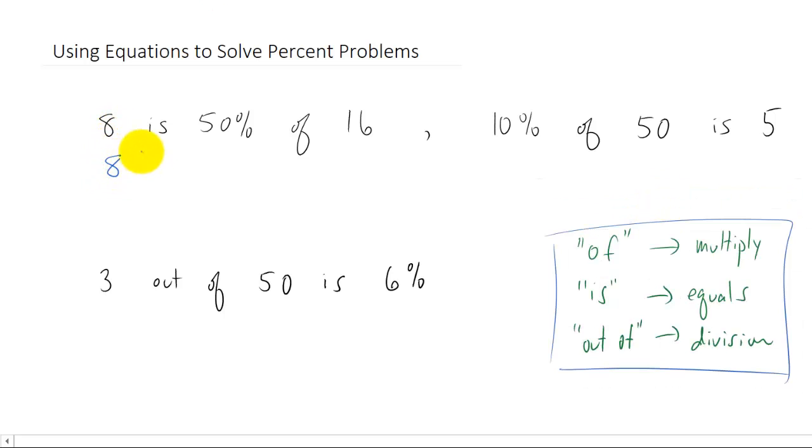Let's start with this. 8 is—we learned that 'is' is going to translate into an equal sign. Now 50%. Typically what I'll do with percentages is I'll write them as decimals when we're writing them in equation form. You learned how to do that in the last video. 'Of' is going to translate into multiplication, and 16. So what we just wrote is that 8 equals .5 times 16, which is true. So we just converted a true statement about percentages into a true equation about percentages.